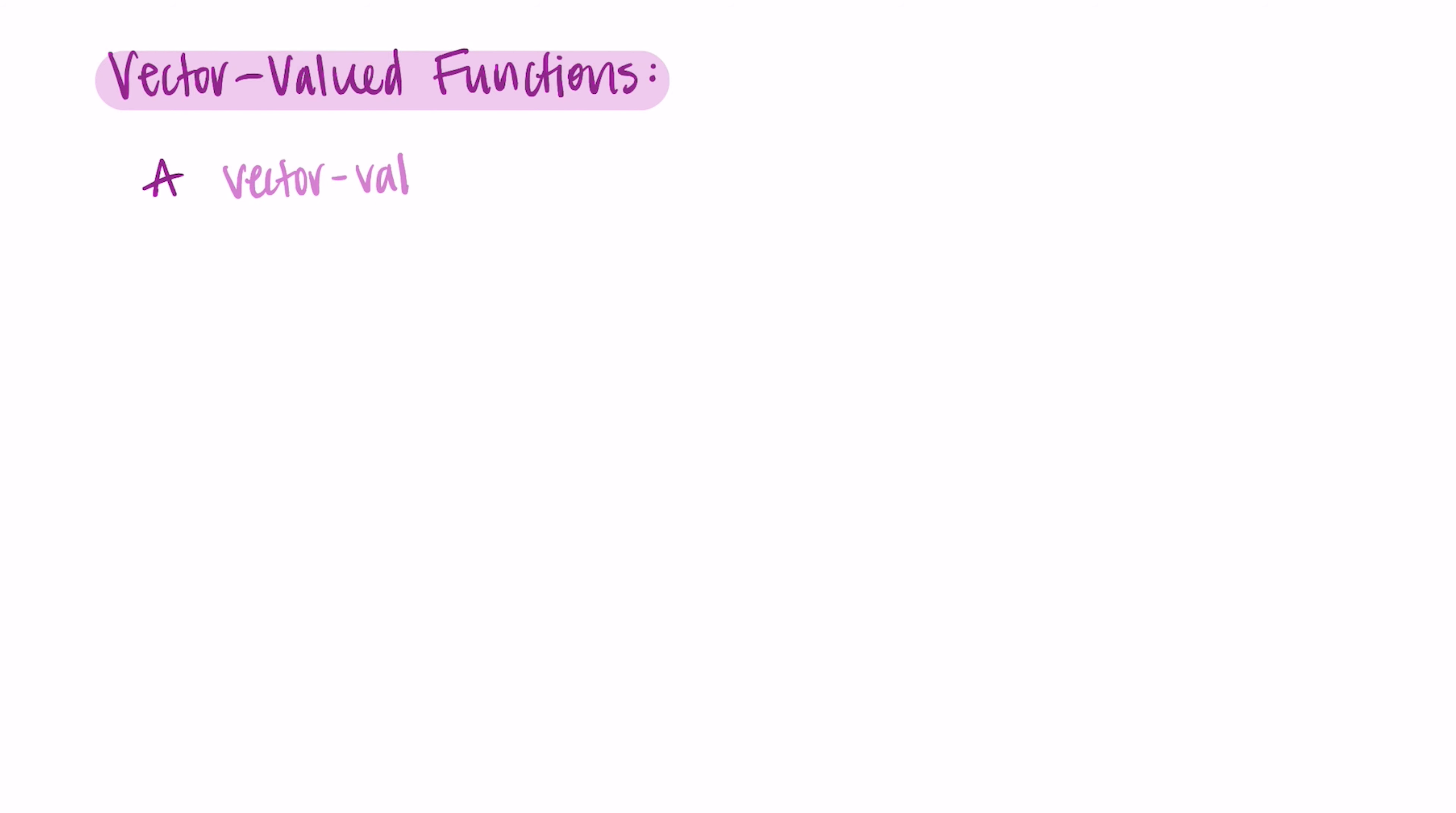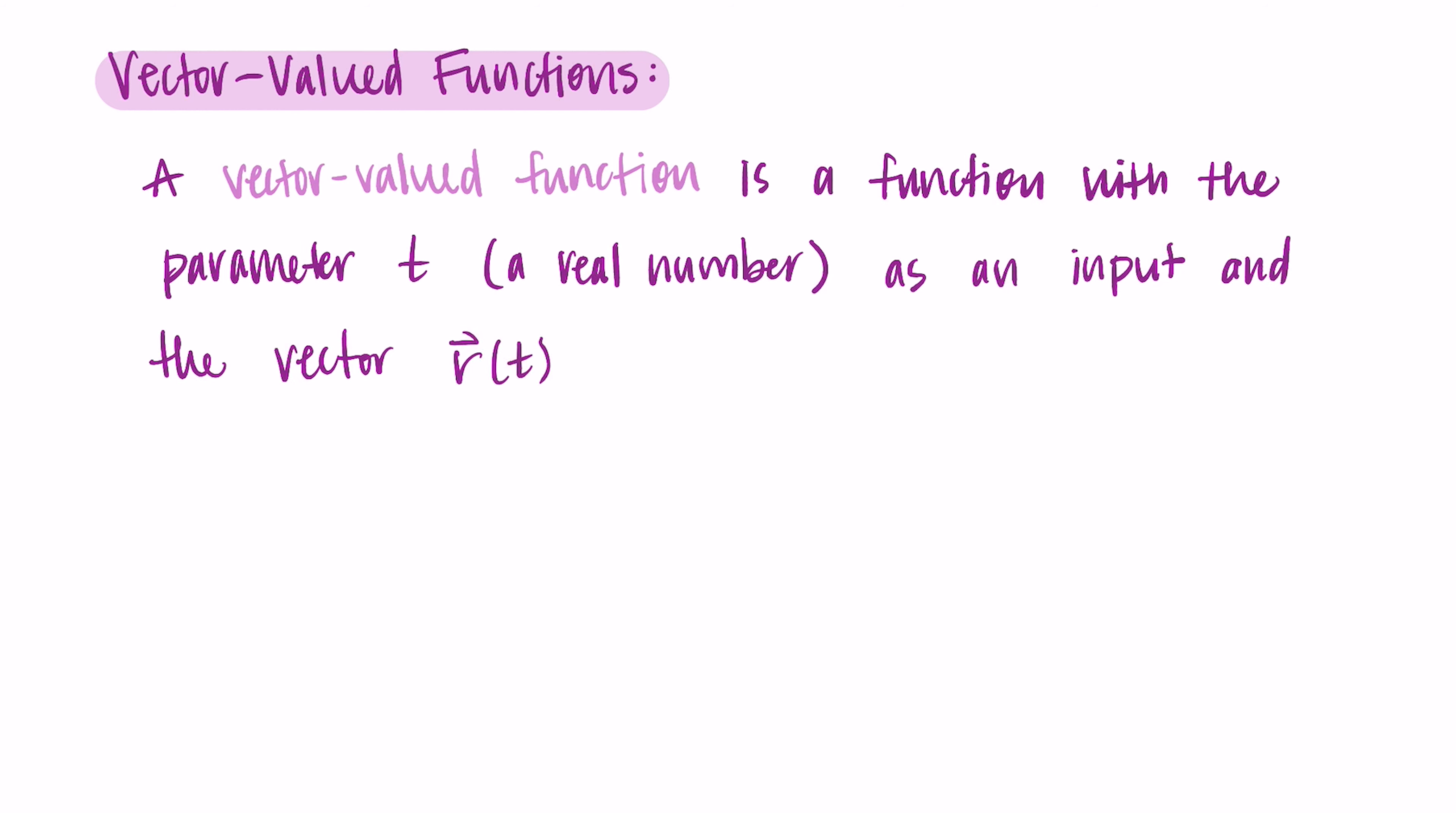So we define a vector-valued function with the following: A vector-valued function is a function with the parameter t. That t value is a real number. So we're taking some real number and that is our input. And then it outputs a vector r of t. So it's a function with a parameter t as the input and the vector r(t) as the output.